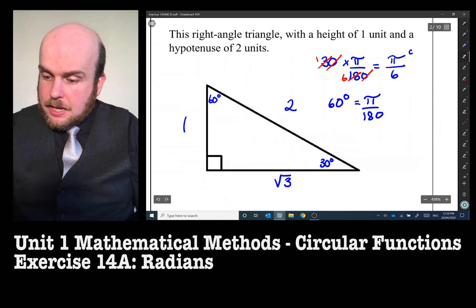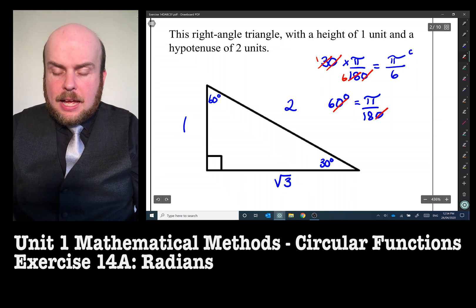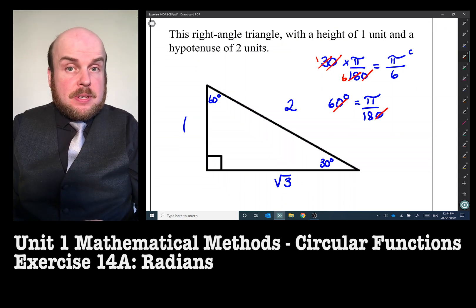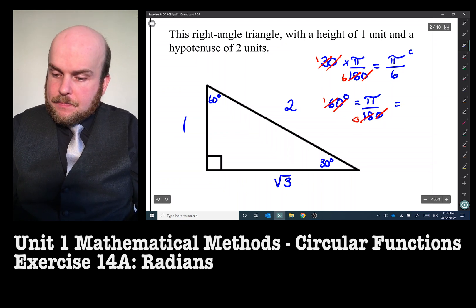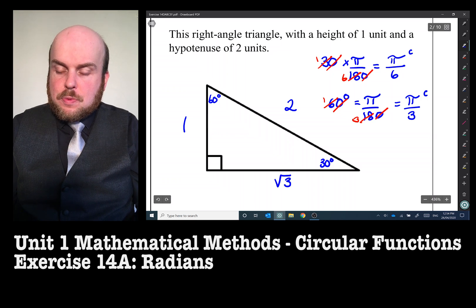60 times π over 180. The zeros can cancel out. How many times does six go into 18? Well of course it goes in three times. So one, three, and this is equal to π over three radians.